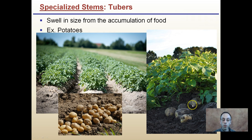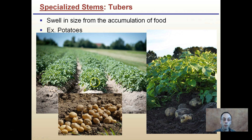All your french fries and potato chips come from these specialized stems, which is the plant accumulating food below the soil surface. You see here they're hilled up, and in this hill is where all the potatoes are developing and accumulating the sugars from the leaves through the photosynthetic process.